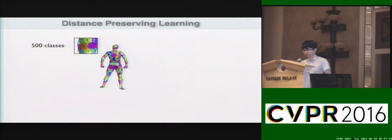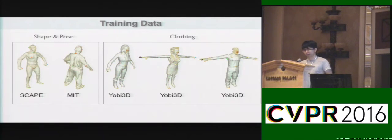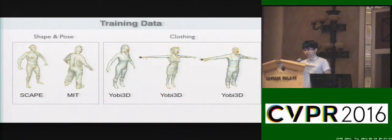Here's how the segmentation looks like. We segment the human body into 500 different classes and apply 100 different random segmentations, training such classifications simultaneously. Our training data consists of two parts. To capture the difference between shapes and poses, we use the SCAPE and MIT dataset, which gives us dense correspondence between them. To handle variation of clothing, we picked over 2,000 meshes from the Yobi3D dataset and manually annotated them with sparse landmark points.